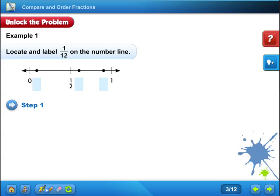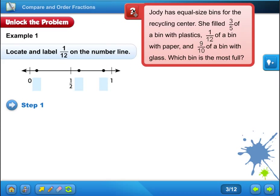So let's pull out the question. And the question says, Jodi has equal size bins for the recycling center. She filled 3 fifths of a bin with plastic, 1 twelfth of a bin with paper, and 9 tenths of a bin with glass. Which bin is the most full? So there's our question. 3 fifths was plastic, 1 twelfth was paper, and 9 tenths was glass.